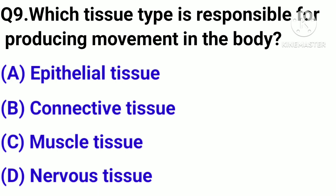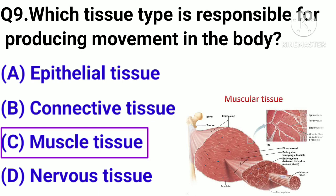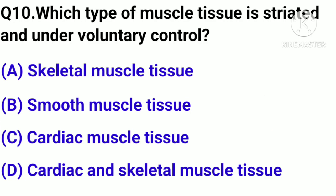Question number 9. Which tissue type is responsible for producing movement in the body? Option A: Epithelial tissue. B: Connective tissue. C: Muscle tissue. D: Nervous tissue. Correct answer: Option C, Muscle tissue.